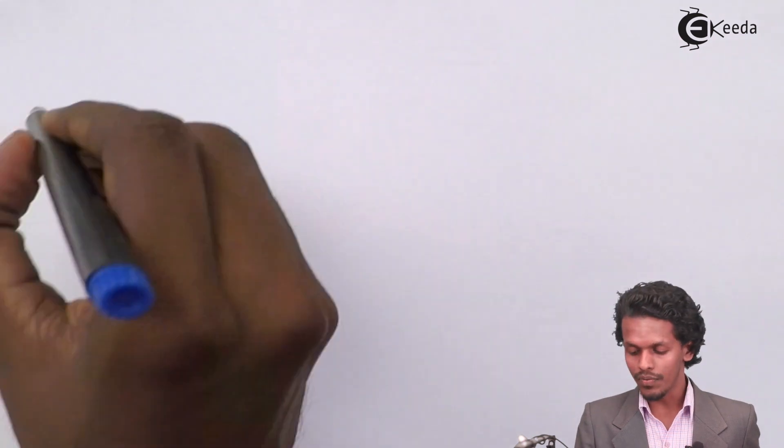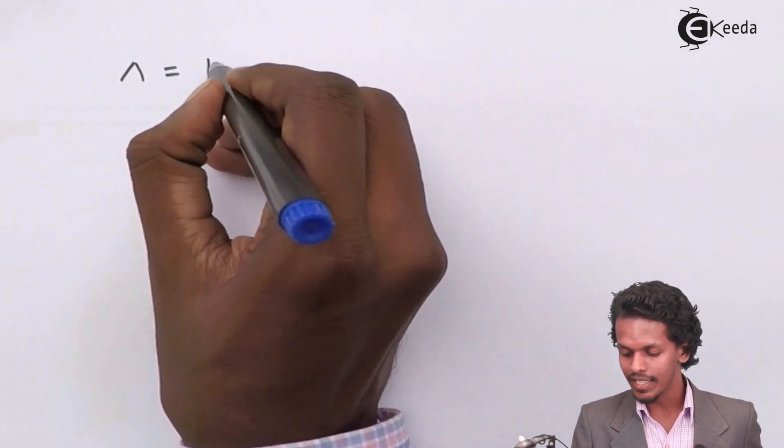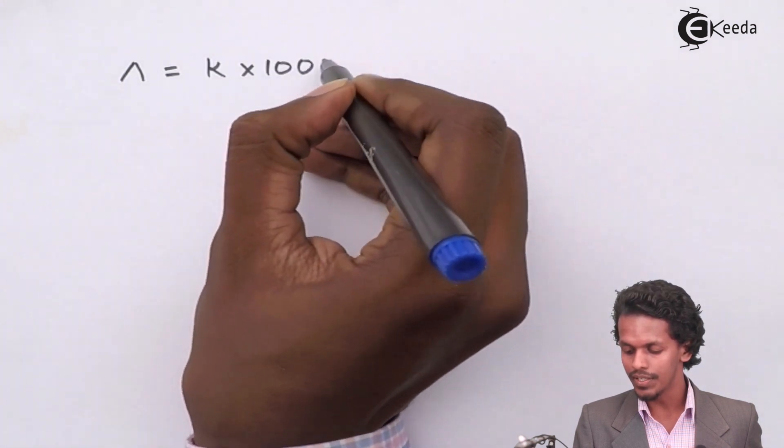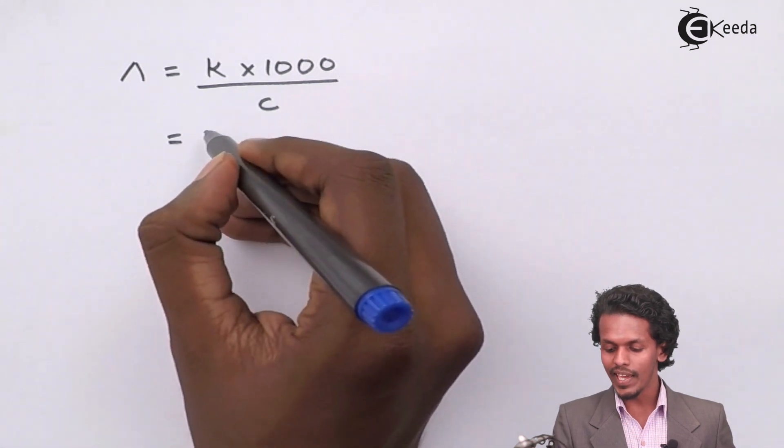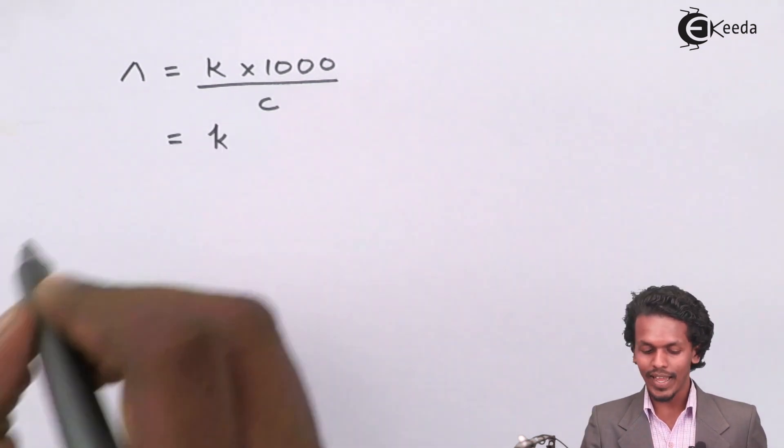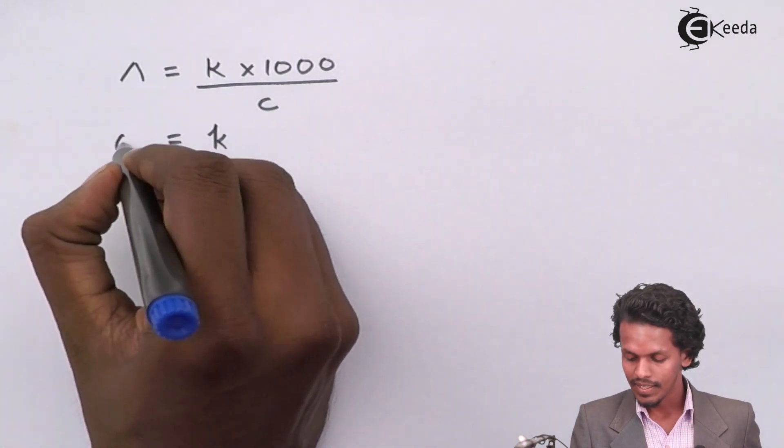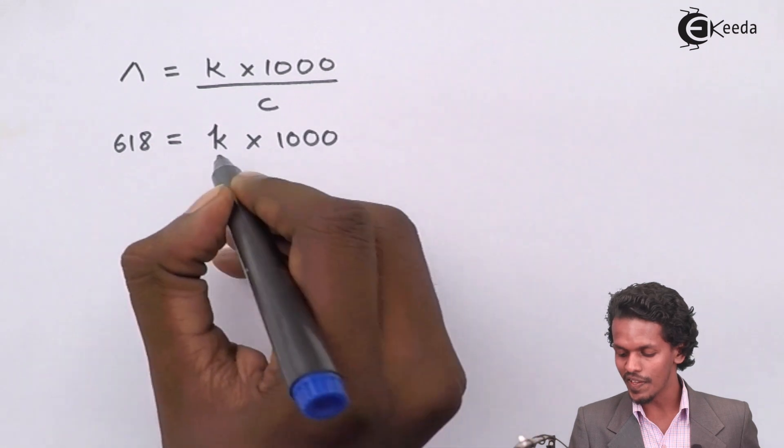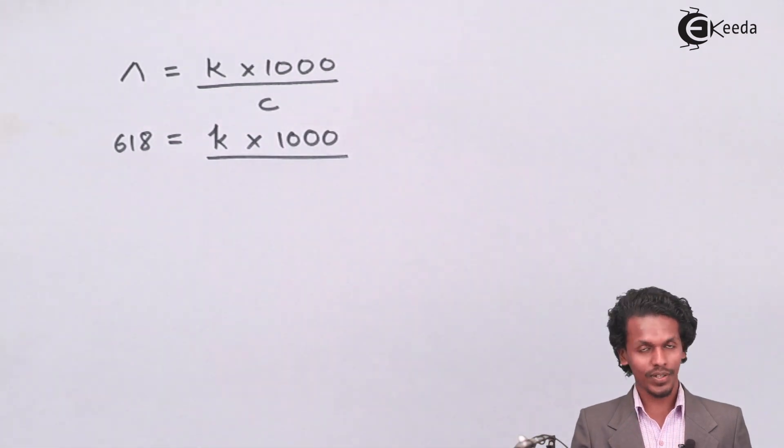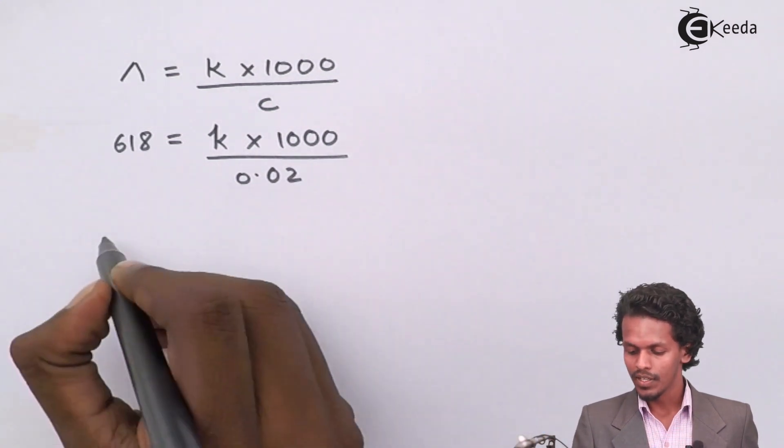The conductivity has a formula which is related to the molar conductivity as Λ equals k times 1000 divided by c. In this case, the value of k is not known, but the value of molar conductivity is given as 618, and the concentration is 0.02 molar.